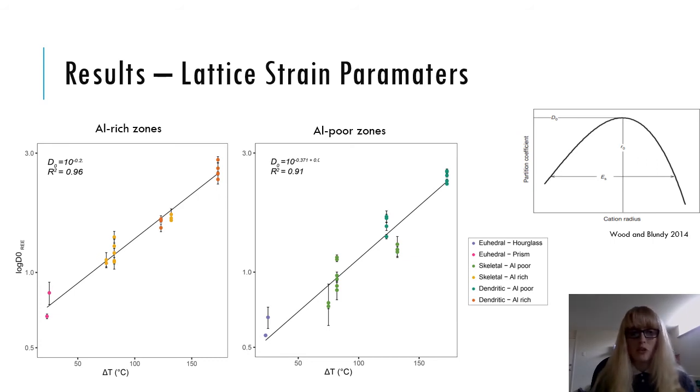In the M2 site, we found that the Young's modulus and the ideal cation radius were found not to vary with undercooling, which indicates that the nature of the lattice site doesn't change. However, the maximum partition coefficient increased with undercooling in both aluminium rich and aluminium poor zones, which you can see in the plots here. This result indicates that as undercooling increases, higher concentrations of rare earth elements in the M2 site can be incorporated into the crystal lattice.